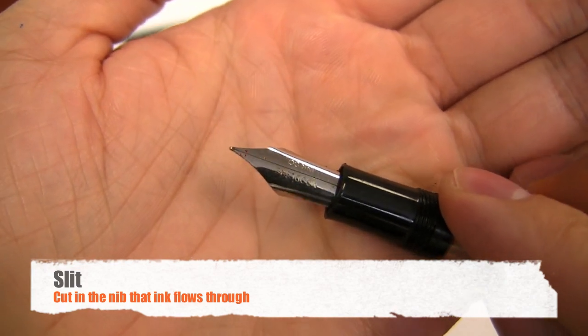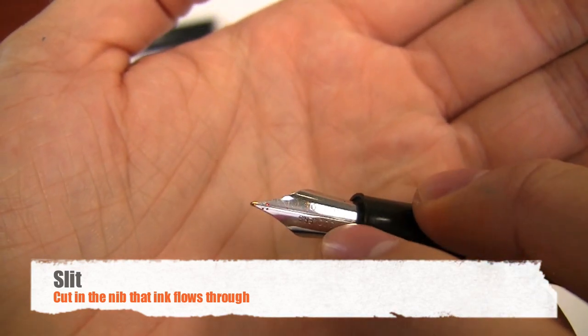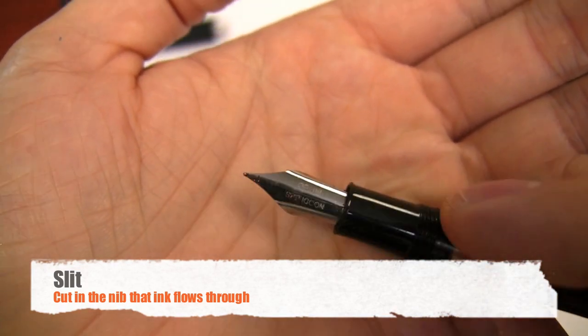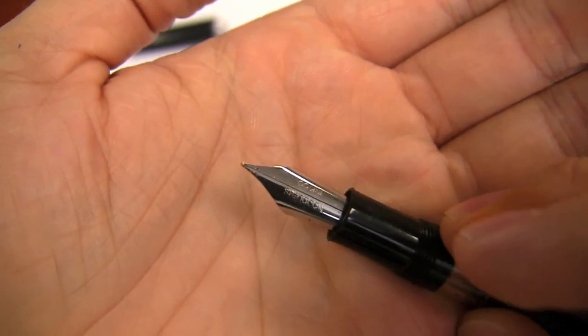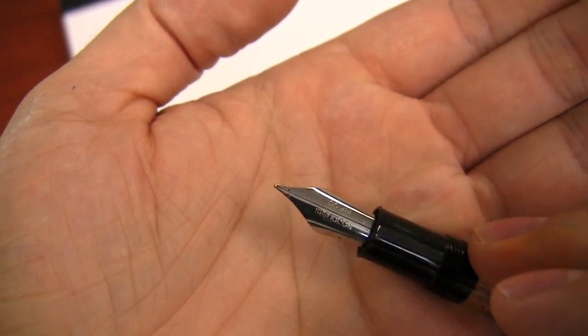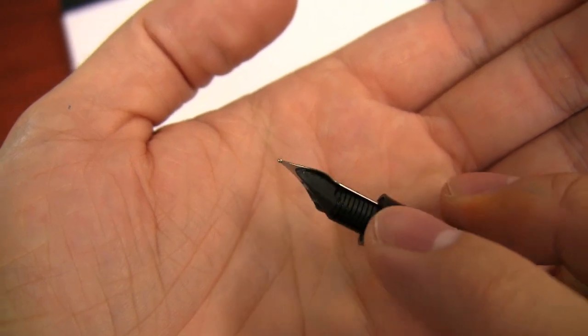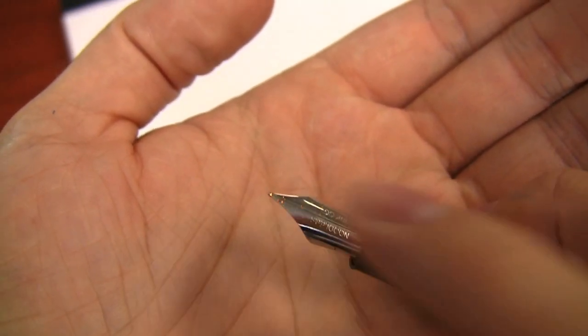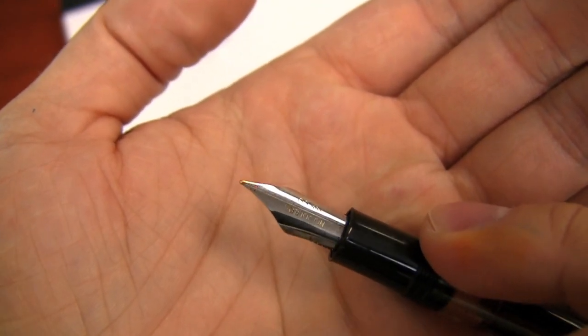The slit on a fountain pen is this line that splits straight down the middle of the nib. That is what serves as the function for the capillary action that draws the ink from the feed to the very tip so that the pen will actually write.